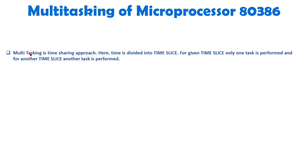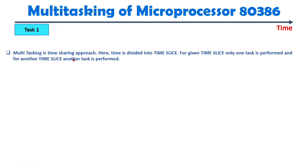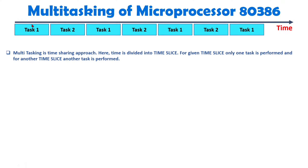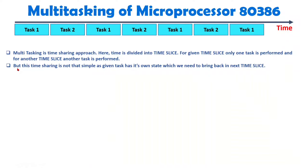Multitasking is a time sharing approach where time is divided into time slices, and for a given time slice only one task is performed, and for another time slice another task is performed. The time axis is bisected into time slices, with each task assigned a single time slice. Once you complete a time slice you jump to another task — task one is there with time slice one, and in the second time slice task two is performed by the 80386. However, this time sharing approach is not as simple as it appears.